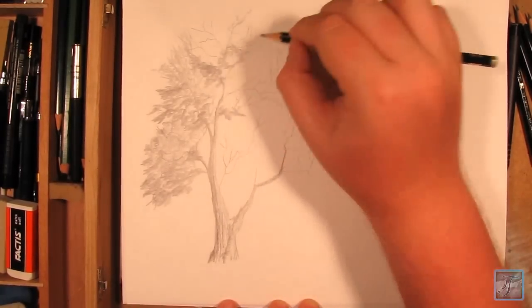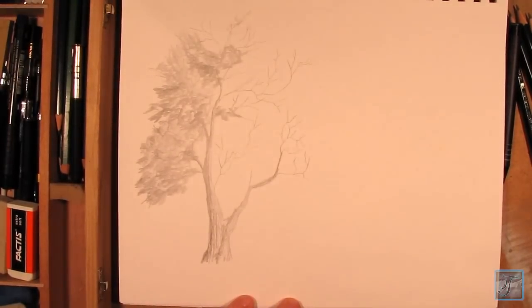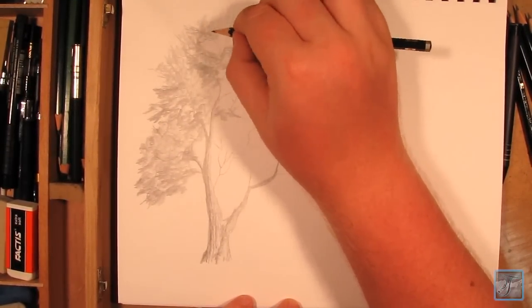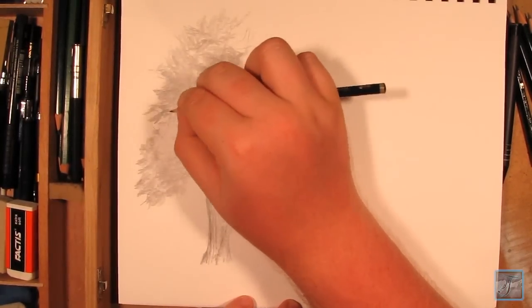You also want to make sure that you add in some shadow to the trunk of the tree, as well as the leaves. It helps really make it look very three-dimensional and lifelike. For the darker part of the tree I used a 2B pencil.